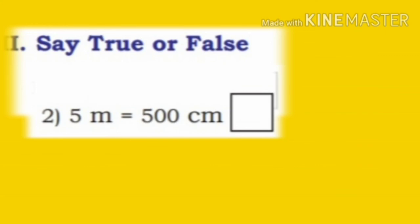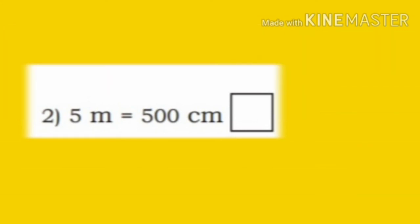Now, second one: 5 meter is equal to 500 centimeter. It is true. Put a right mark.